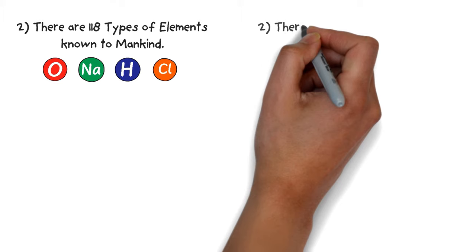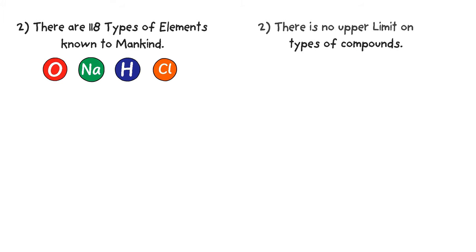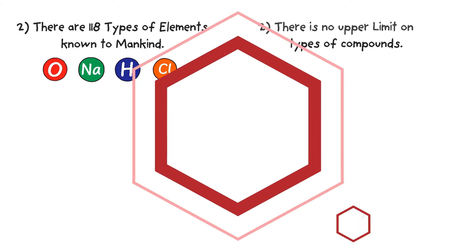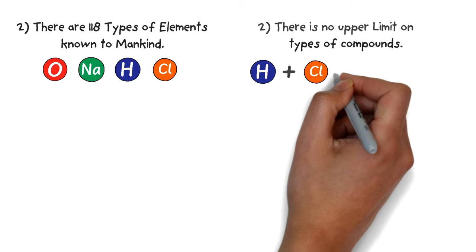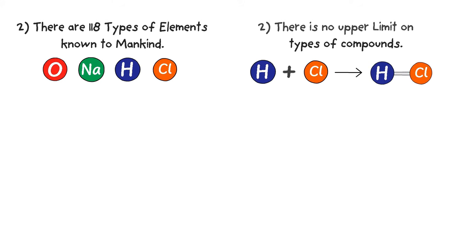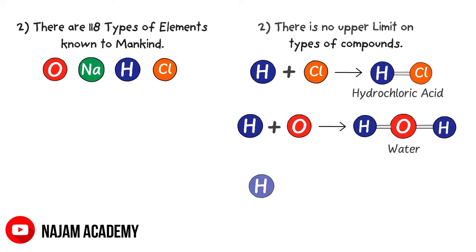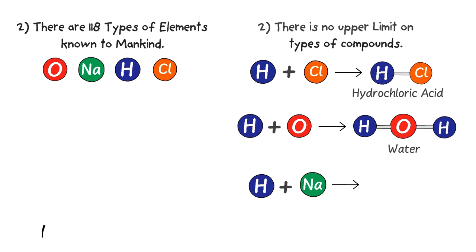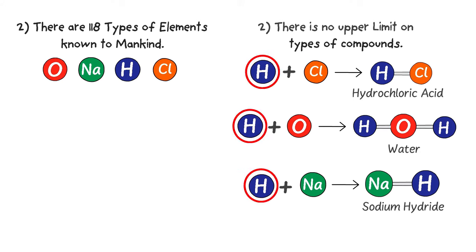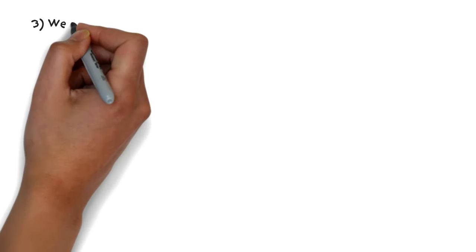Secondly, there are only 118 types of elements known to mankind — for example, oxygen, sodium, hydrogen, and chlorine. While there is no upper limit on the types of compounds, because different chemical combinations of elements form different compounds. For example, when hydrogen and chlorine combine chemically they form HCl or hydrochloric acid; when hydrogen and oxygen combine they form H₂O or water; and when sodium and hydrogen combine they form sodium hydride.